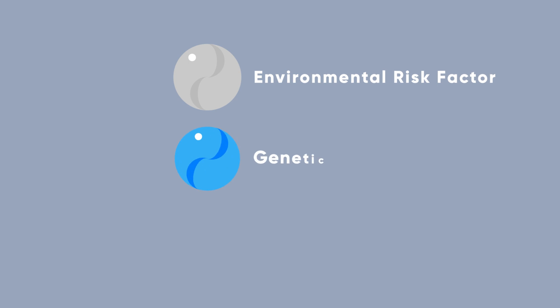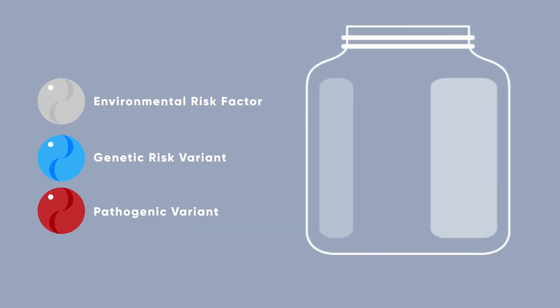To understand why some people develop a complex disease and others do not, we will use the example of a jar of marbles. When the jar overflows, he or she might get sick.